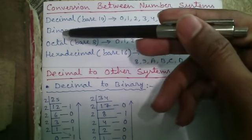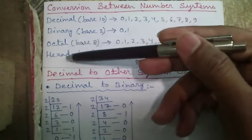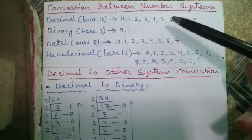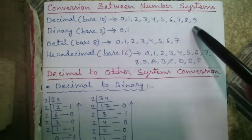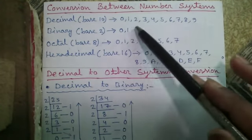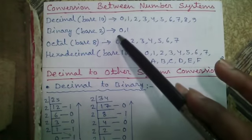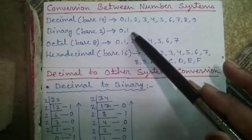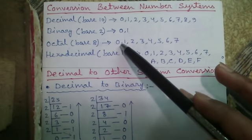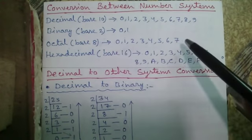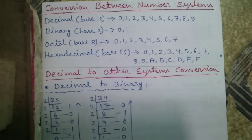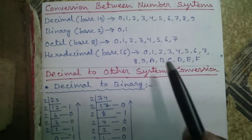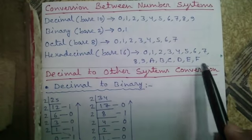There are 4 bases currently in use: decimal, binary, octal, and hexadecimal. Decimal or base 10 has 10 digits from 0 to 9. Binary is base 2 with 2 digits: 0 and 1. Octal is base 8 with 8 digits from 0 to 7. Hexadecimal is base 16 with 16 digits — 10 numbers from 0 to 9 and 6 letters from A to F.